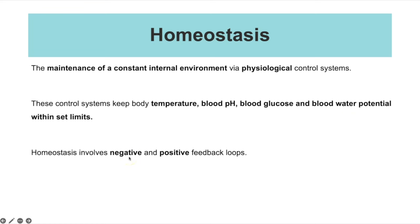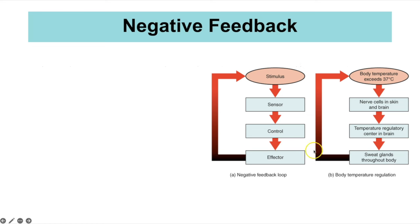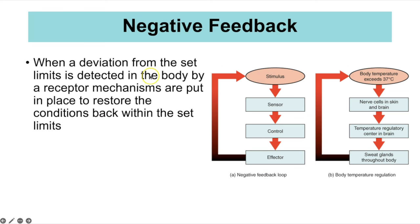Homeostasis involves both negative and positive feedback loops. The examples we're looking at focus on negative feedback loops: if a condition moves outside the set limits, mechanisms are put in place to bring it back. A receptor detects the deviation and mechanisms restore conditions back within the set limits. For example, if body temperature exceeds 37°C, it's detected by cells in the nervous system, resulting in mechanisms such as sweating, which causes cooling and brings your temperature back to normal.